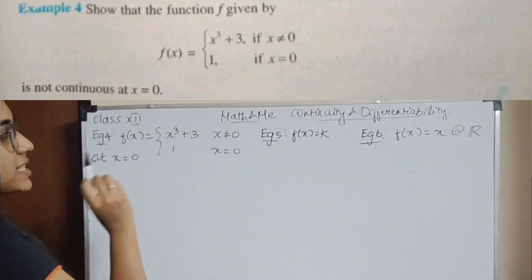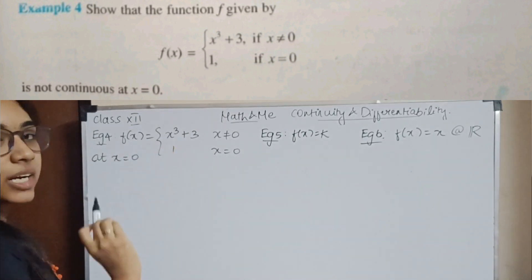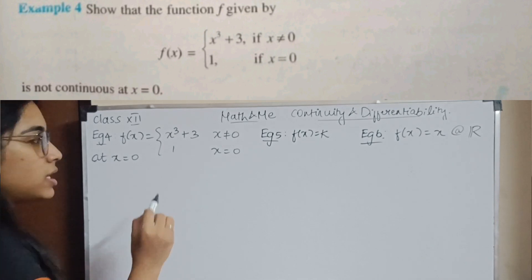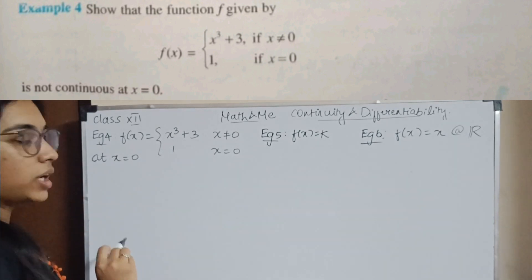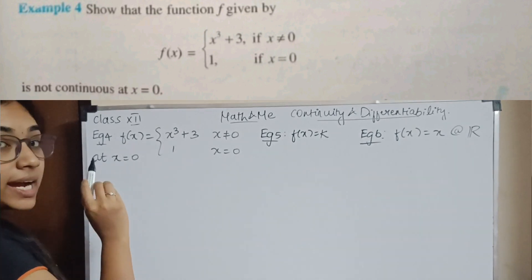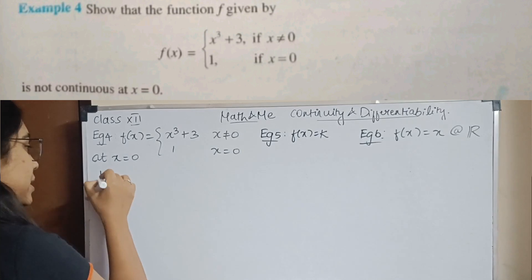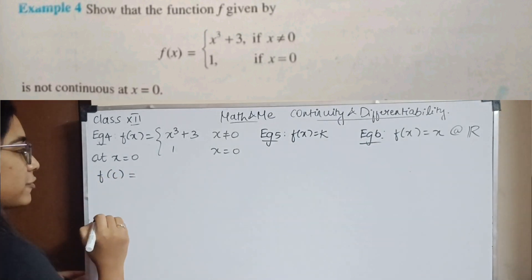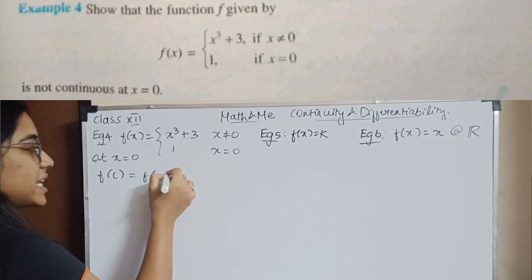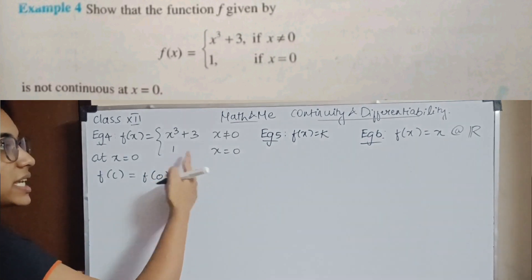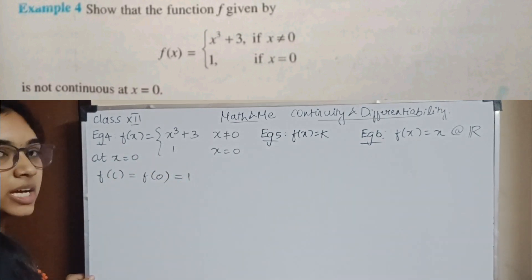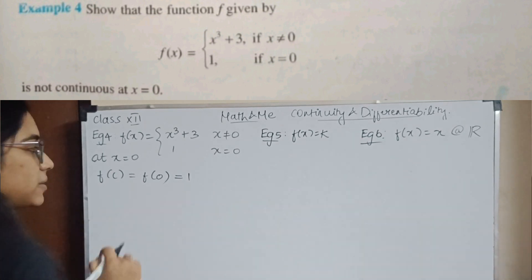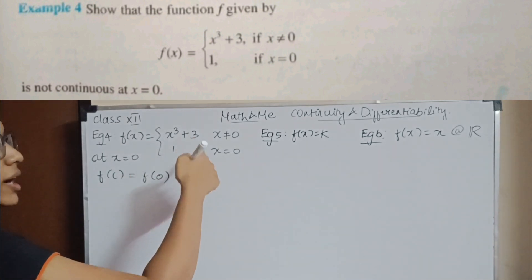Example 4: f(x) = x³ + 3 when x ≠ 0, and f(0) = 1. We need to find if it is continuous at x = 0. So the first step: f(c) when c = 0 is simply 1. We have found f(c).